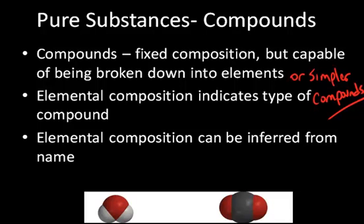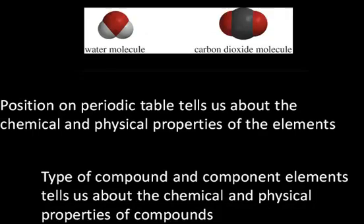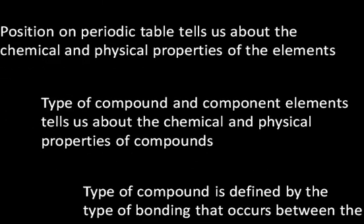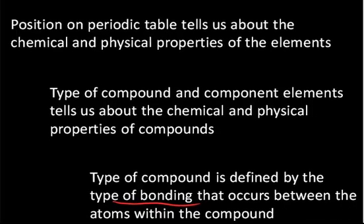It's very important to be able to identify names of compounds and to have a visual image of what that compound is. The position on the periodic table tells us about the chemical and physical properties of elements. Similarly, the type of compound and its component elements tells us about the chemical and physical properties of those compounds. The type of compound is defined by the type of bonding that occurs between the atoms within it.